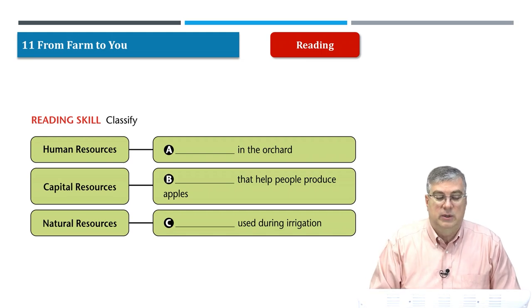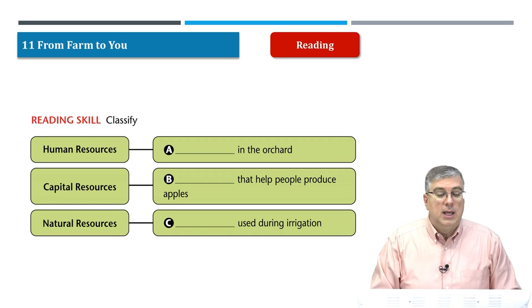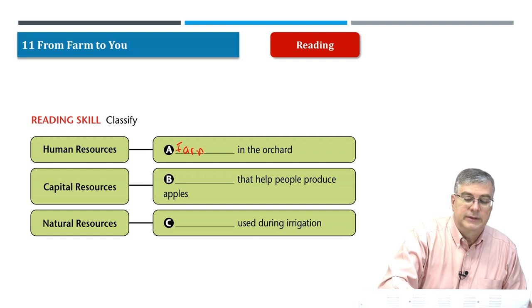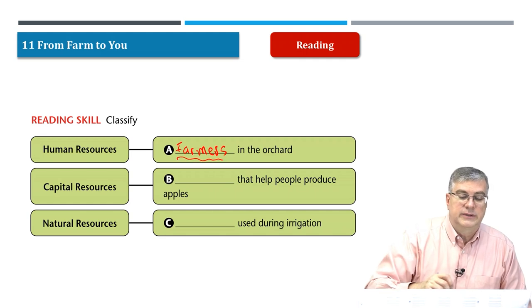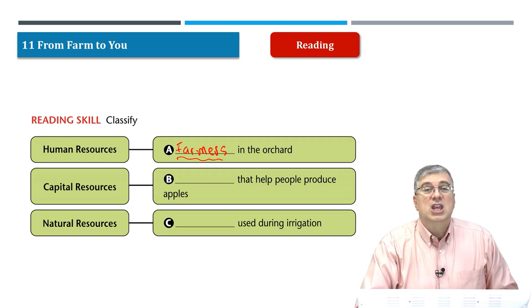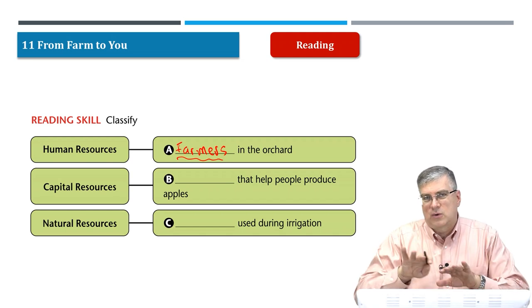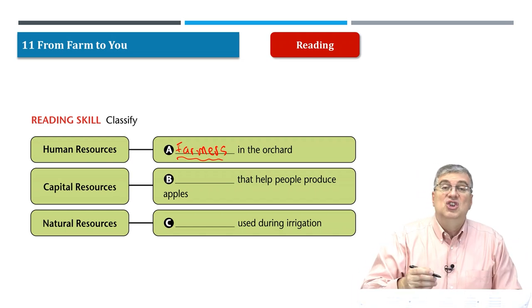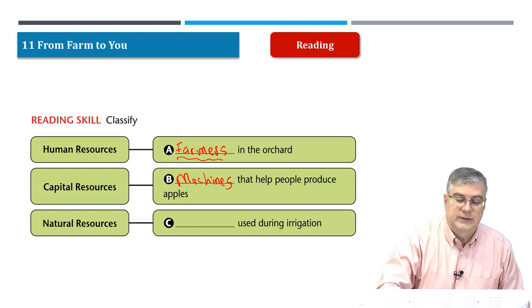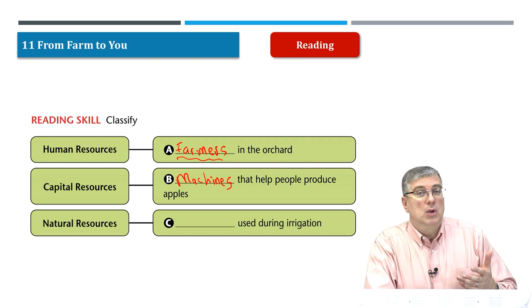What are human resources? From the passage, farmers grow apples in the orchard, so farmers are human resources — their skills are resources. Farmers in the orchard are an example of human resources. For capital resources, machines are used to sort the good apples from the bad apples and to help people produce apples. So machines that help people produce apples are an example of capital resources.